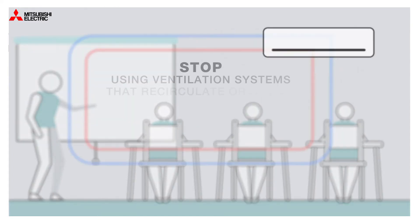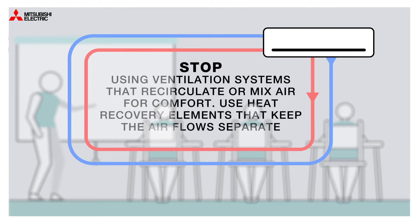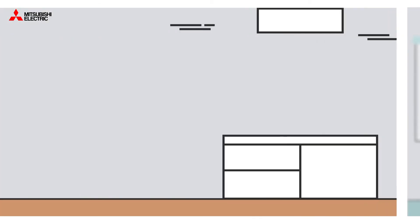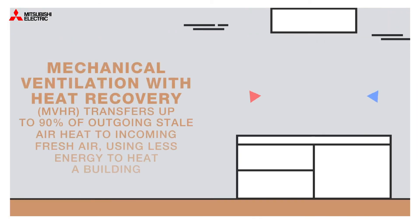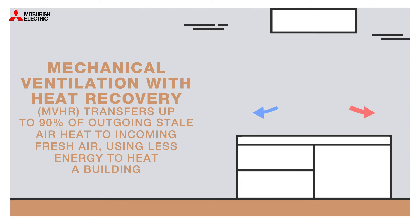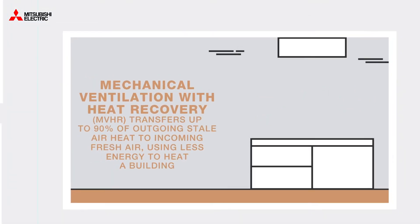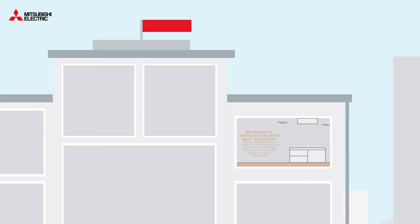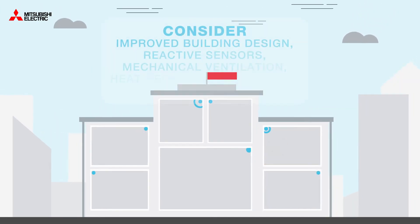Stop using ventilation systems that re-circulate or mix air for comfort. Use heat recovery elements that keep the airflow separate. Use mechanical ventilation and heat recovery MVHR systems with the bypass function to provide higher ventilation rates of fresh air and better control of air quality.